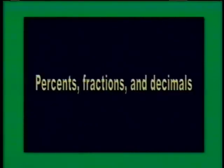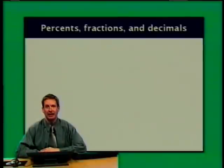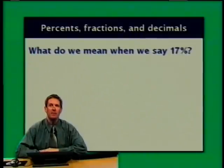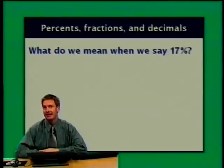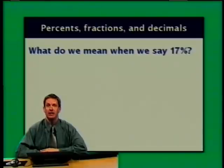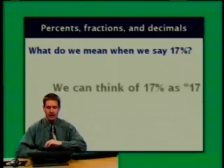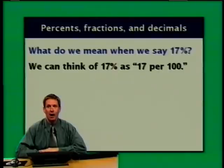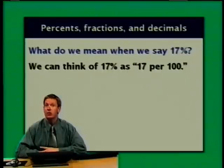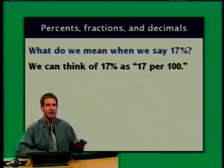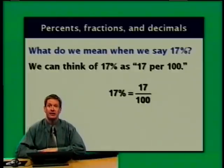Let's begin by reviewing the relationship between percents, fractions, and decimals. What do we mean when we say 17%? The key is to focus on the 'cent.' Think about words that have 'cent' in them — century is 100 years, there are 100 cents in a dollar. When we say 17%, we mean 17 per 100, or 17 out of 100. So when we represent 17% as a fraction, we write it as 17 over 100.